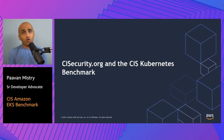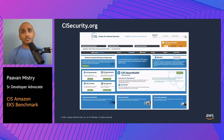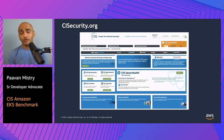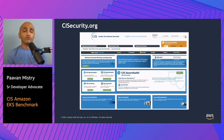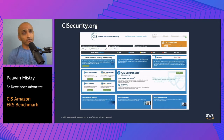CIS Security is a community-driven nonprofit responsible for CIS controls and CIS benchmarks that are globally recognized best practices for securing IT systems and data. The organization leads a global community of IT professionals to continuously evolve these standards and provide products and services to proactively safeguard against emerging threats. AWS publishes CIS guidance for AWS Foundations Benchmark, Amazon Linux 2 Benchmark, and Amazon Linux 2 STIG Benchmarks, and has also integrated compliance checks against these benchmarks in services like AWS Security Hub.